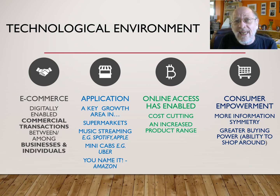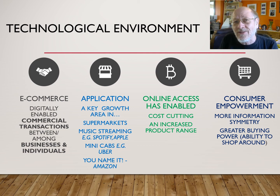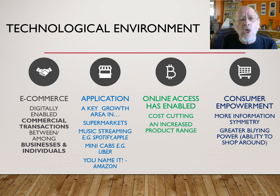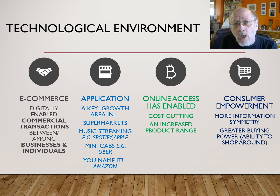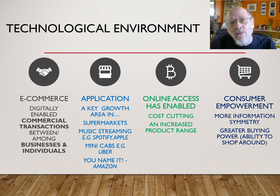It has also increased power for consumers. Information symmetry means that consumers aren't as ignorant as they once were. If you want something, you can check out reviews, technical reviews, you can do price comparisons, you can see what other consumers have thought about it. So you've got a lot more power than before, and at the click of a button, you've got the ability to shop around if you don't like what you've already seen.